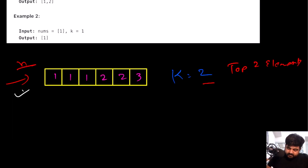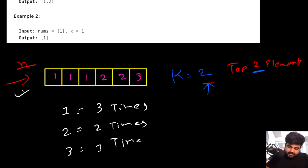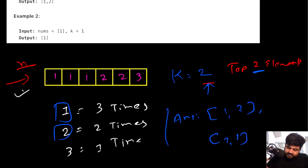So if we see in this case, this 1 is actually present 3 times, this 2 is actually present 2 times, and this 3 is actually present 1 time. Now since k is equal to 2, we need to return the top 2 elements, and clearly we can see that the top 2 elements in this case are 1 and 2. So we can return the answer as 1 and 2, or 2 and 1, since we can return the answer in any order.